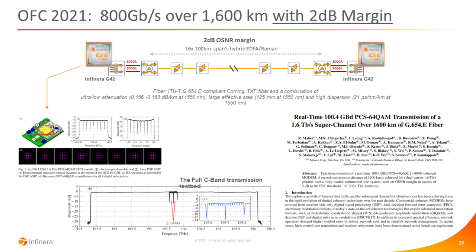At OFC last month, we presented a paper showing improved i6 performance over Corning TXF fiber — we doubled that to 1,600 kilometers at 800G. The conditions were 16 spans of 100 kilometers, EDFA-Raman amplification, TXF fiber with large effective area, high chromatic dispersion, and very low attenuation. We fully loaded the C band with ASE noise and had two wavelengths. Even at 1,600 kilometers, we had 2 dB of margin, suggesting perhaps 60% further reach — somewhere in the 2,500 kilometer-plus range — if run down to zero dB margin. A very impressive result showing the potential for 800G in some long-haul scenarios.